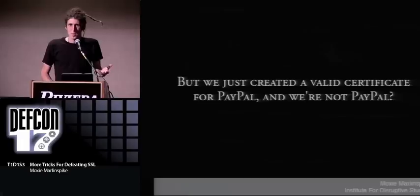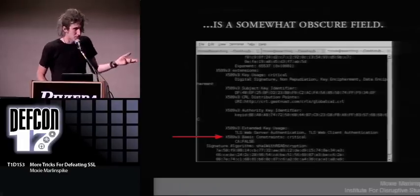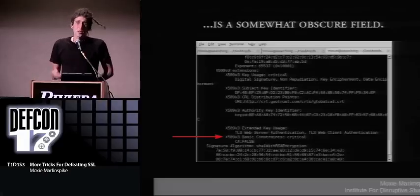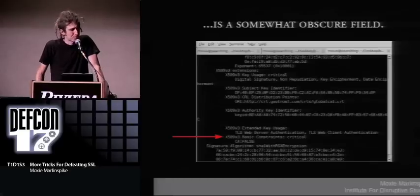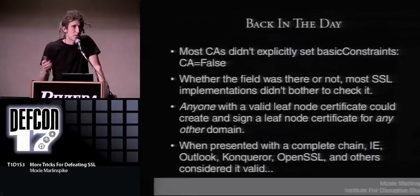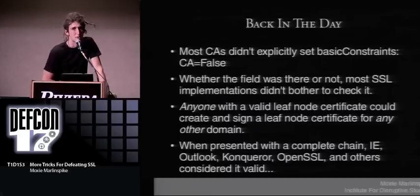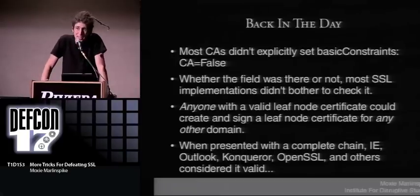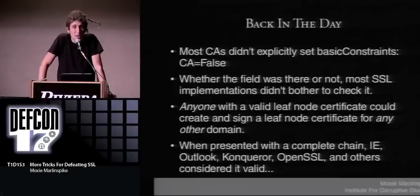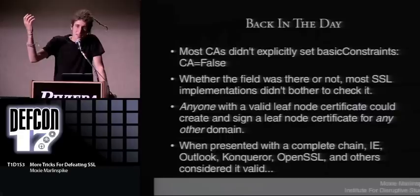We just created a certificate for PayPal and we're not PayPal. The missing piece is this somewhat obscure field called basic constraints. The idea is that not all certificates should be able to do all things — if you have an end-entity certificate for a website, it should really only be used to identify your website, not to sign other certificates. The problem was that back in the day, when most certificate authorities would issue certificates, they would just leave this field out. You'd think an SSL implementation would assume the conservative thing — that a certificate without this field is not a CA certificate — but it turns out most SSL implementations just didn't bother to check it.